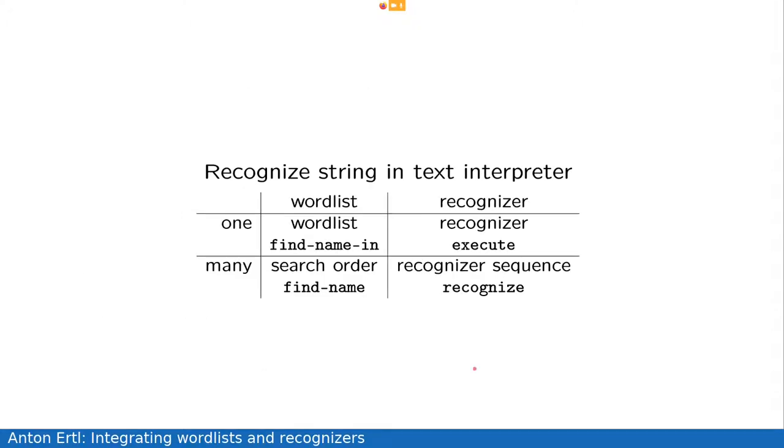So, the next step in this kind of quest for uniformity is to see that we have now four different concepts for recognizing a string in the text interpreter.